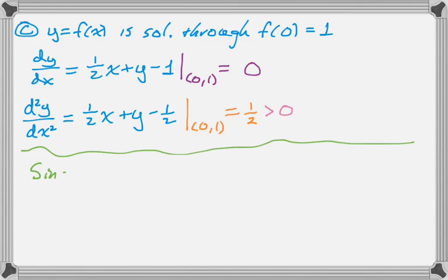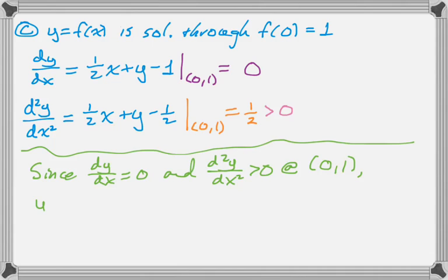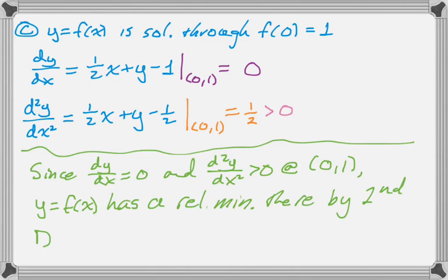So I know that the tangent line is horizontal and the function is concave up, so it must be a minimum by the second derivative test. So I'm just going to write that out. And so y equals f of x has a relative minimum by the second derivative test.